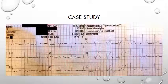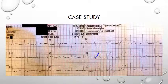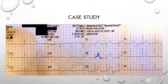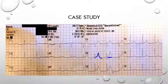Hyperacute T waves are broad and asymmetrically peaked, and they can be seen in the early stages of ST elevation and may often precede the appearance of ST elevation and Q wave formation. Here in V2 we can see a concave upsloping hyperacute T wave that's asymmetrical. We can differentiate these from a hyperkalaemia-type T wave because of the wide base. Prinzmetal angina is another condition in which hyperacute T waves may be seen.